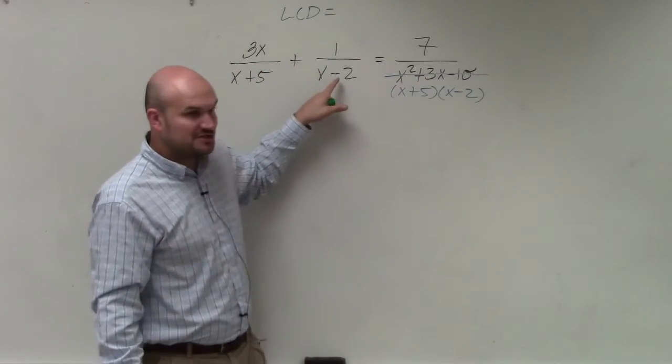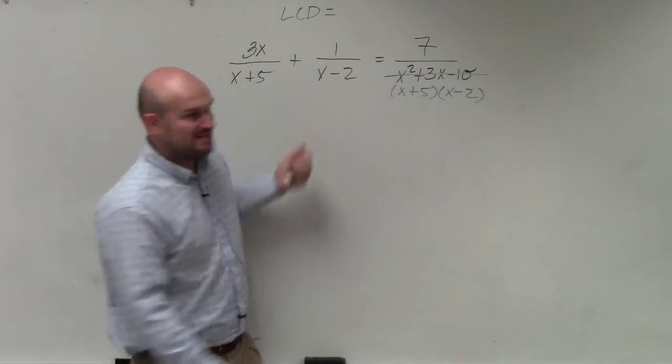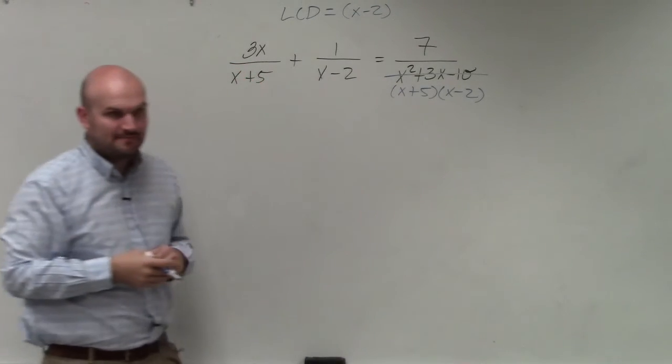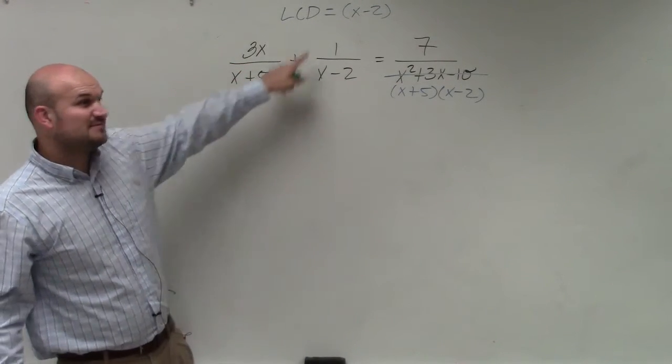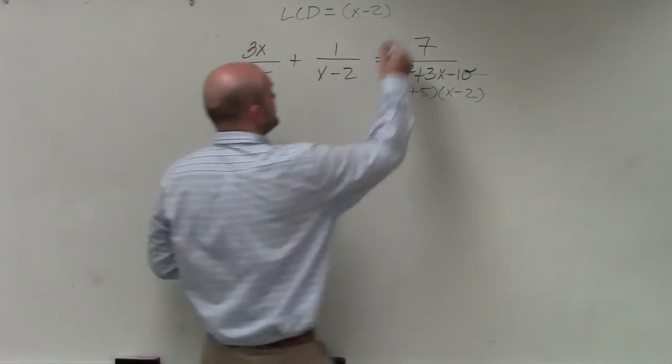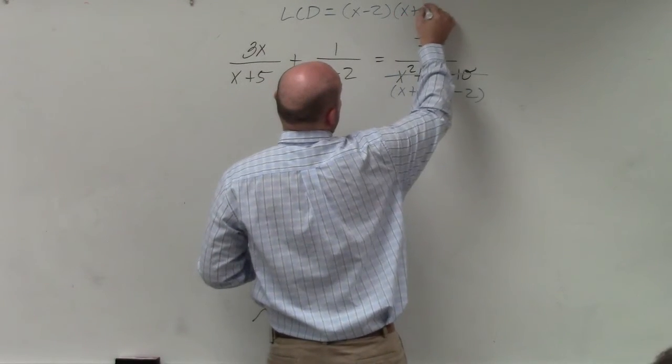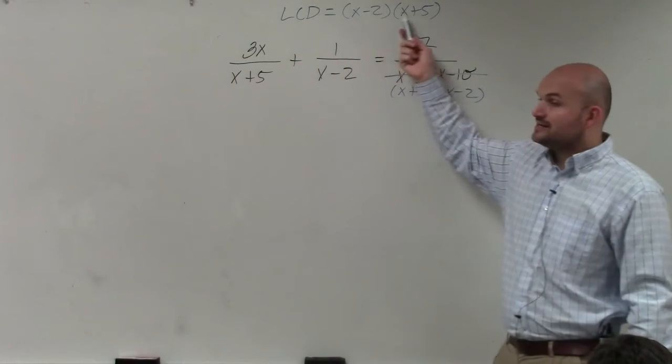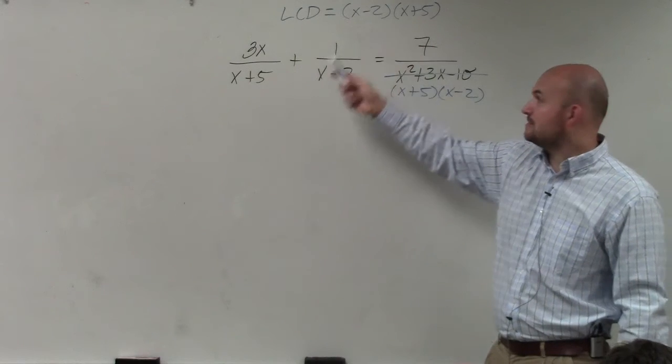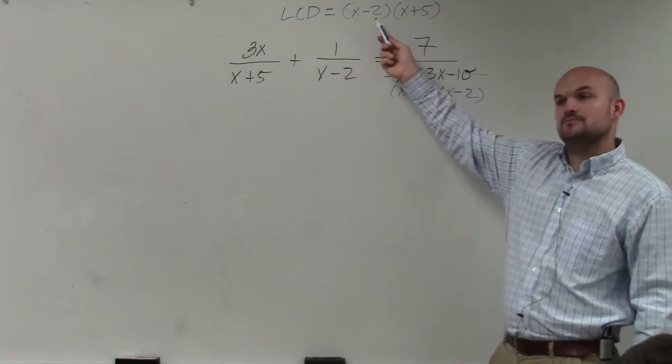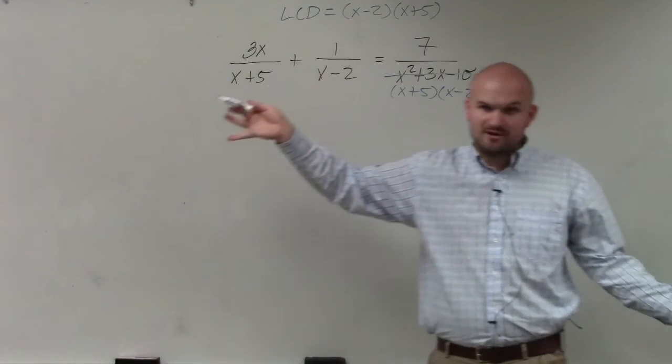So if x minus 2 needs to divide into my LCD, well, then I need to make sure that x minus 2 is contained in my LCD. x plus 5 doesn't divide into x minus 2 evenly, so I need to include an x plus 5 as well. So we go back and check before we move on. Does x plus 5 divide into this? Yes, x minus 2 times. x minus 2 divides into this. And then x plus 5 times x minus 2 divides into that as well. Does everybody follow me?